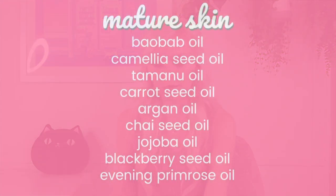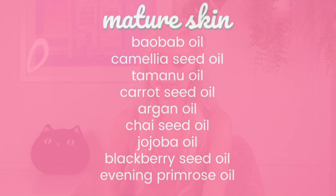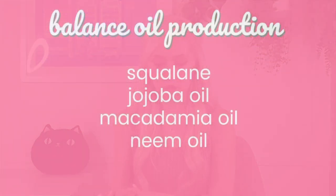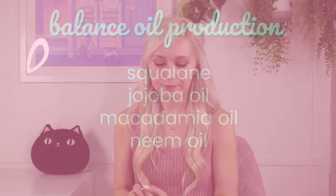For anti-aging on mature skin, you might want to use baobab oil, camellia seed oil, tamanu oil, carrot seed oil, argan oil, chia seed oil, jojoba oil, blackberry seed oil, and evening primrose oil. If you want to balance oil production, you could use squalane, jojoba oil, macadamia oil, and neem oil.